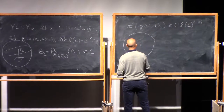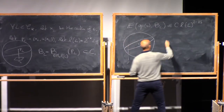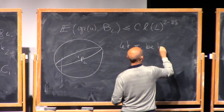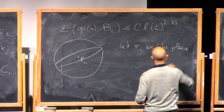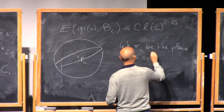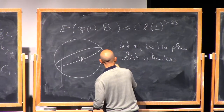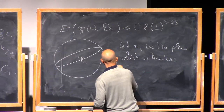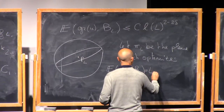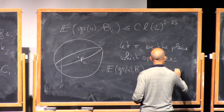So here's P. Now pick up an optimal plane for the excess. Let π_L be the plane which optimizes your excess, so this means that the excess of the graph u on the ball of radius L is actually the excess relative to this plane π_L.